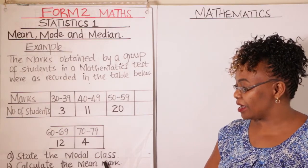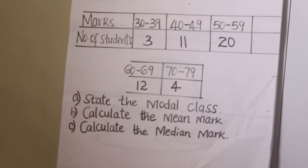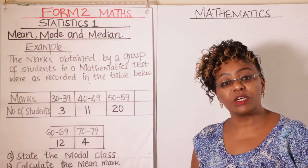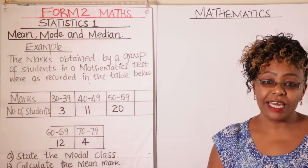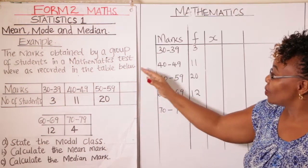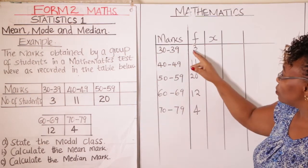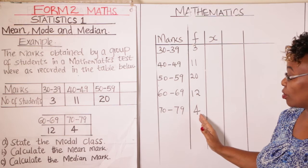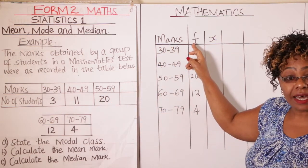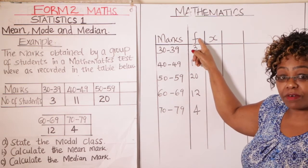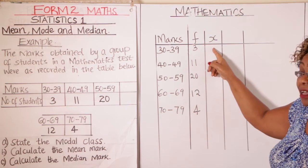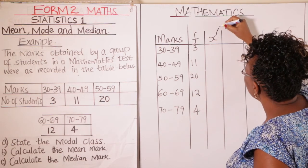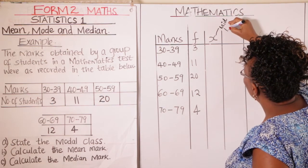Now for part (b): calculate the mean mark. To find the mean, you draw what we call a frequency distribution table. You put your classes in the first column, the number of students (frequency, F) in the second column. In the third column you put x, which refers to the midpoint of each class.